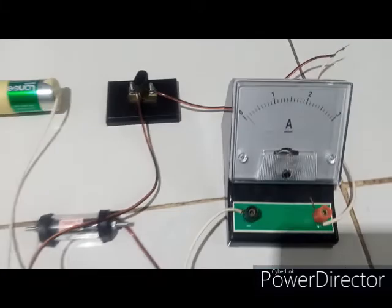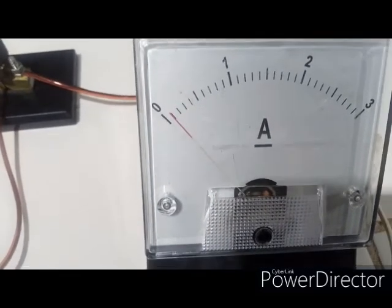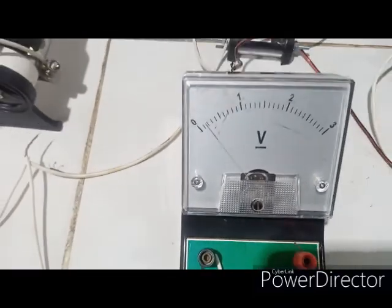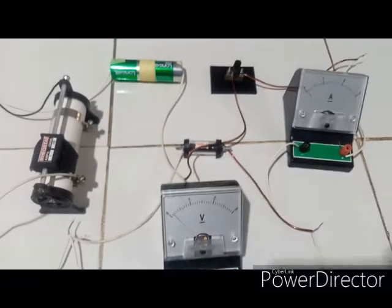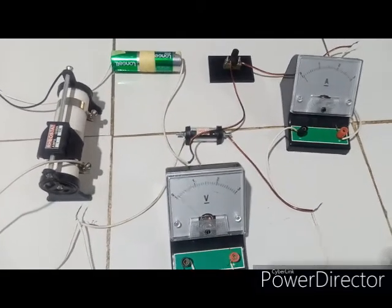So the last reading, the sixth one, I have ammeter to be 0.1 and then I have my voltmeter reading to be 0.2. So this is the sixth reading that I'm going to be taking. So I'm going to compile that and then draw the graph.